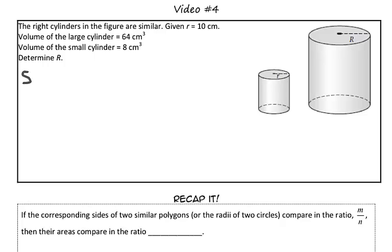So, we know that if the side ratio is equal to m over n, then we know there's a relationship between the ratio of their areas and the ratio of their volumes.